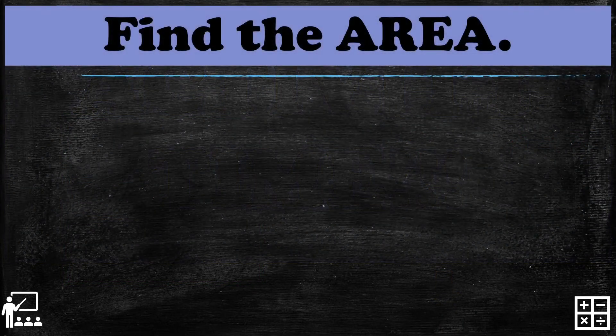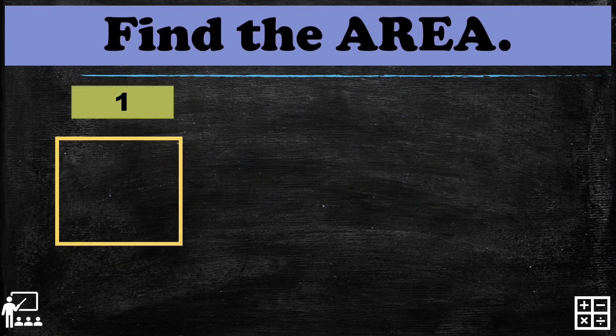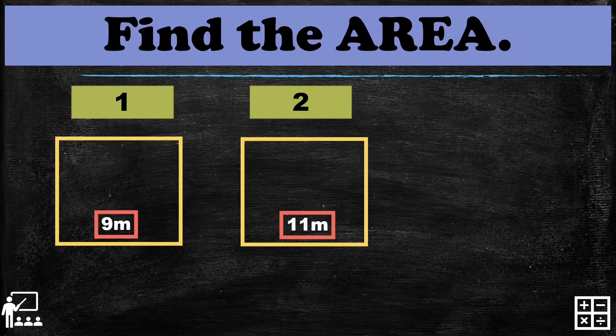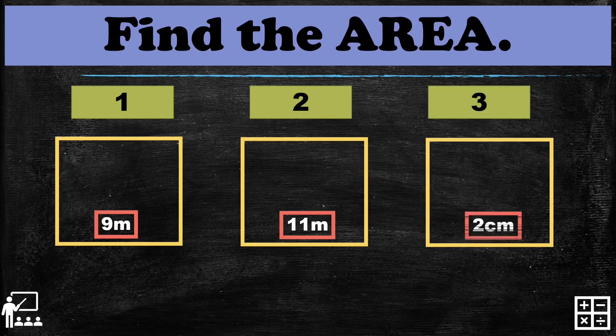Now it's activity time. Find the area: the first square has 9 meters, the second square has 11 meters, and the third square has 2 centimeters. Can you find the area of each square? You have 20 seconds — your time starts now.